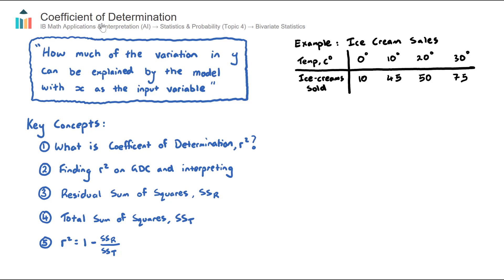In this video, we look at the concept of coefficient of determination, which is part of the AIHL-only course in Topic 4, Statistics and Probability, under the subtopic of bivariate statistics.